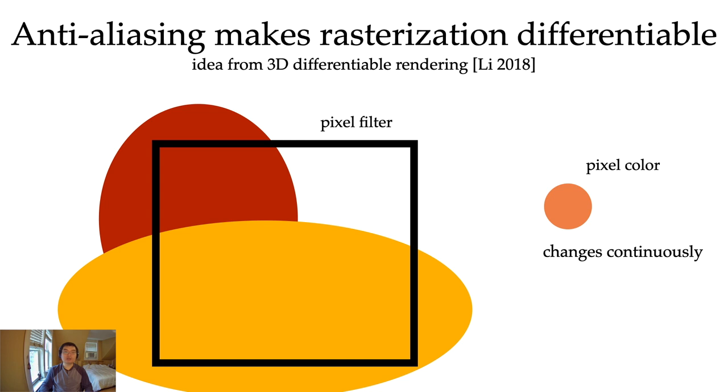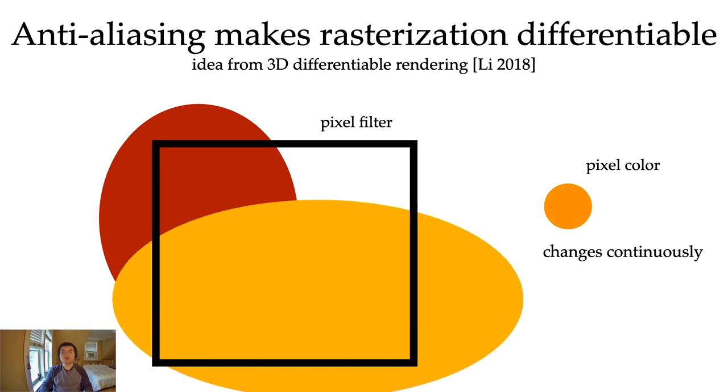To compute the gradients, we borrow the idea from our recent 3D differentiable rendering work. Our key observation is that anti-aliasing makes rasterization differentiable. Even though a point sample might hit or miss a shape, after anti-aliasing, the pixel filter integral changes continuously as the shape deforms.